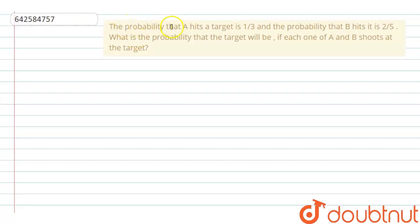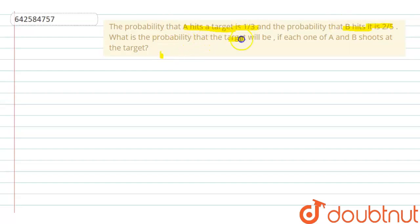Question is: the probability that A hits a target is 1/3 and the probability that B hits the target is 2/5. What is the probability that the target will be hit if each one of A and B shoots at the target?